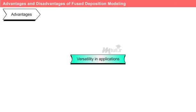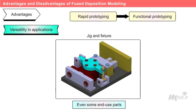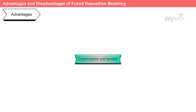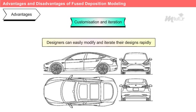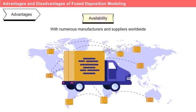Fifth is versatility in applications: FDM can be utilized for a broad range of applications, from rapid prototyping to functional prototypes, jigs, fixtures, and even some end-use parts. Sixth is customization and iteration: with FDM, designers can easily modify and iterate their designs rapidly. And last is availability: FDM 3D printers and materials are widely available, with numerous manufacturers and suppliers worldwide.